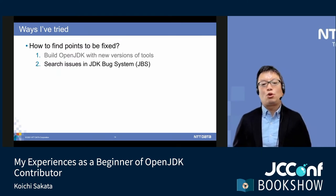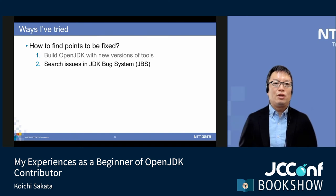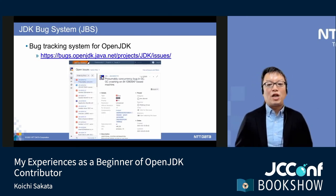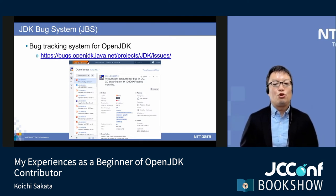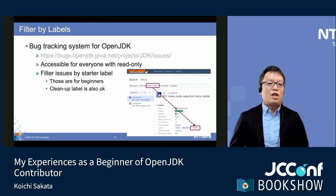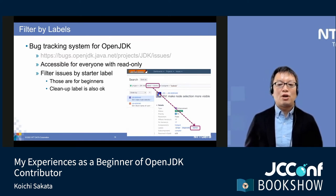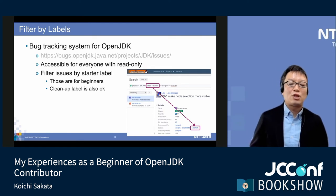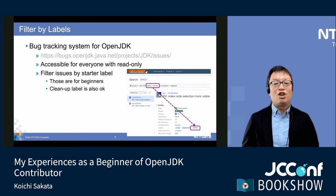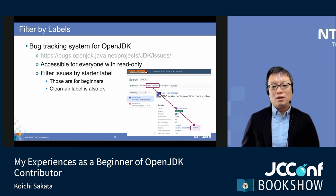I'll introduce another way to find points to be fixed. OpenJDK has a bug tracking system — we simply call it JBS. It's based on Atlassian Jira, so you can operate JBS in the same way as Jira. Look at this screenshot — each issue has detailed information. JBS is accessible for everyone with read-only access; you can search issues on JBS. I used the query language to search issues that have a starter label. Those are good for beginners to address. Issues with a cleanup label are also good for beginners.